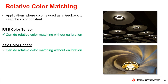In relative color matching applications, both RGB and XYZ color sensors can be used effectively without the need for calibration. Since only one color point is needed to match to, and it was measured in the same color space, an XYZ sensor's ability for brightness measurements does not offer a significant advantage.